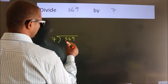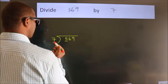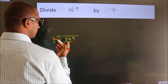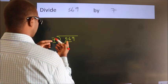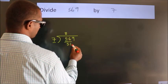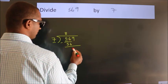here we have 5, here 7. 5 smaller than 7, so we should take two numbers: 56. When do we get 56? In 7 table. 7 8's 56. Now we should subtract. We get 0.